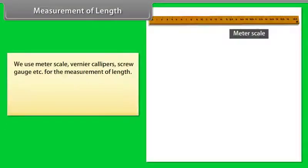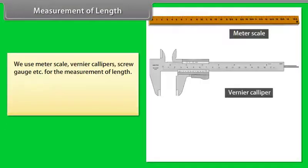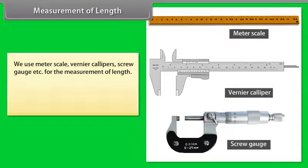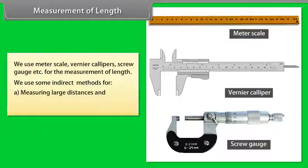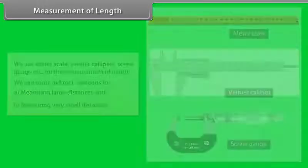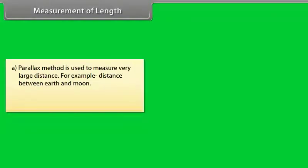Measurement of length. As you know, we use meter scale, Vernier calipers, screw gauge, etc. for the measurement of length. We use some indirect methods for measuring large distances and measuring very small distances. Parallax method is used to measure very large distances, for example, distance between earth and moon.